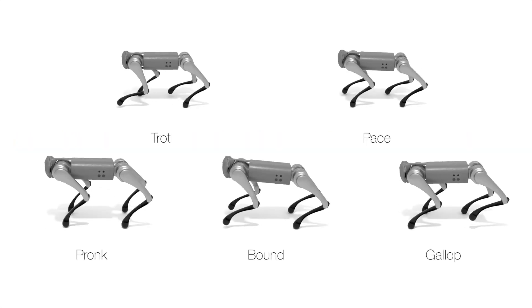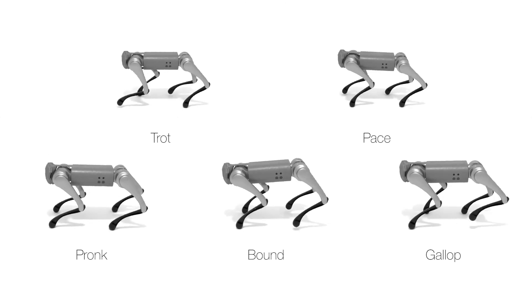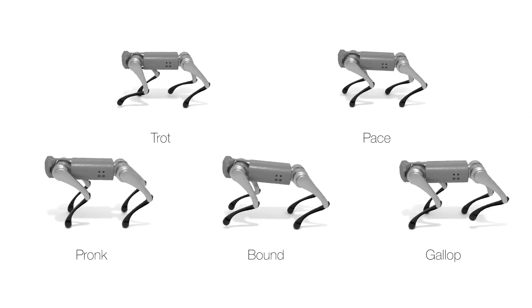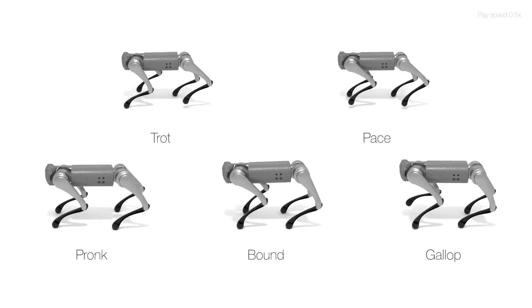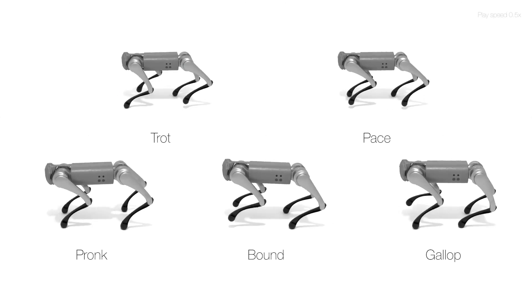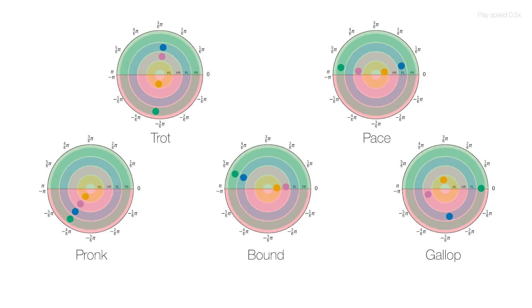To train a single policy producing diverse quadrupedal gait patterns, we employ a gait parameterization that represents quadrupedal gaits using four phase variables.